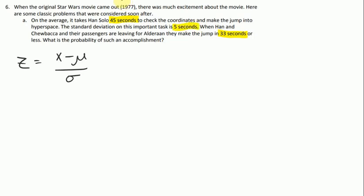So we know that z is going to be equal to 33 minus 45 over 5. That's equal to negative 12 over 5, which is equal to negative 2.4.